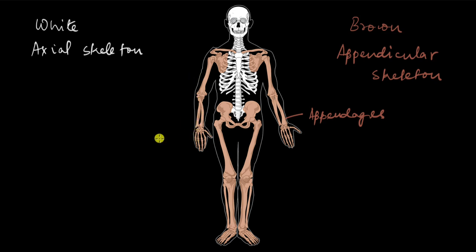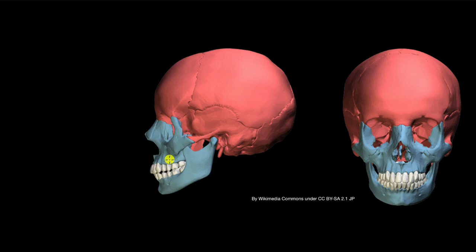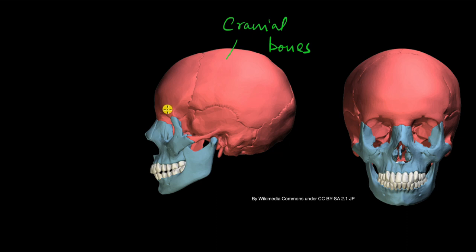The appendicular skeleton provides support to our appendages, hence the name. In this video we will look at different parts of the axial skeleton and what bones make it up. Let's start with the skull. These are two views of our skull, and the part shown in red is made up of cranial bones. All these cranial bones cover the entire head and are also present inside the eye sockets. The blue bones are called facial bones because they make up the face.